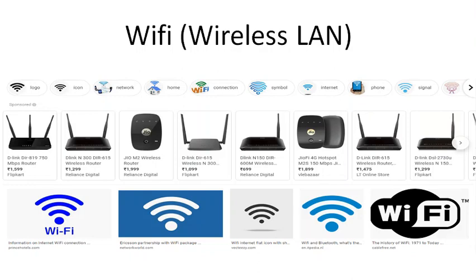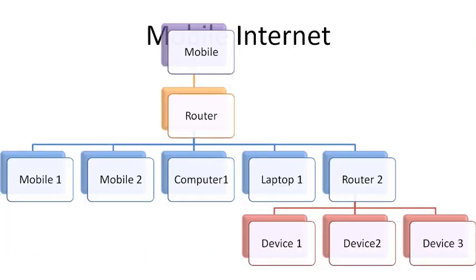We are going to put our mobile into hotspot mode and connect the router to it in wireless repeater mode. Then we will connect to the router to access the mobile data internet. Here is the detailed block diagram of how the mobile is connected to the router, and the router is connected to any number of mobiles or computers. The DHCP server in this setup runs on the mobile, allocating IP addresses for the connected devices.